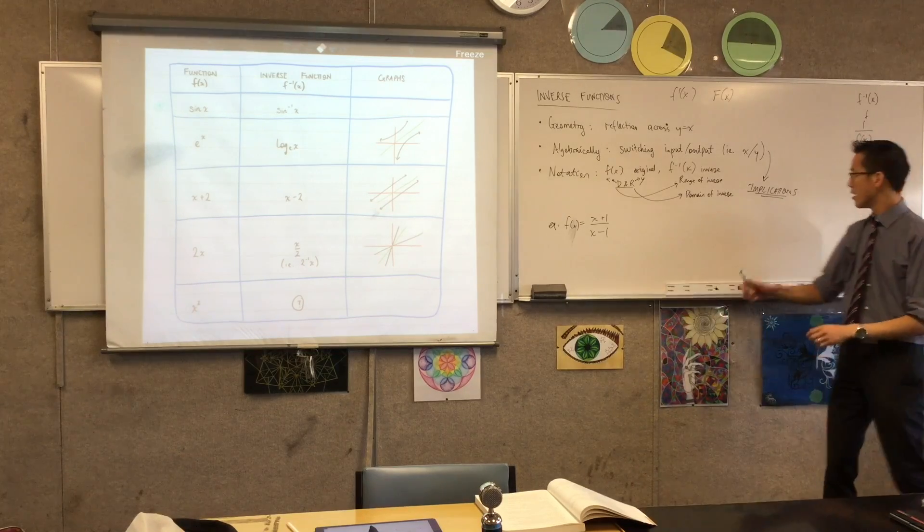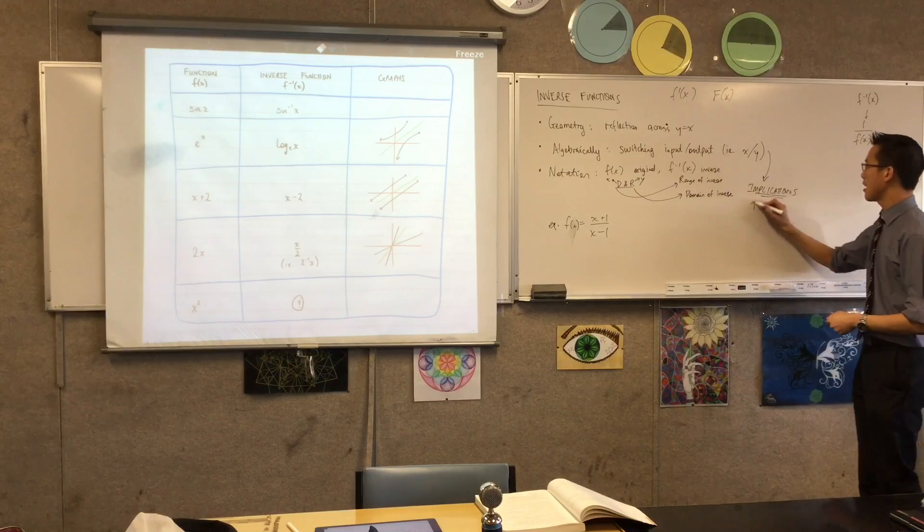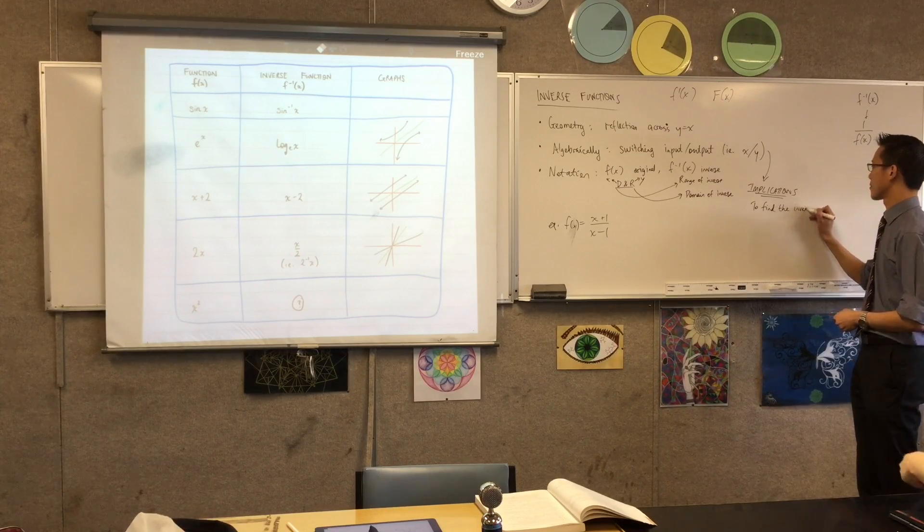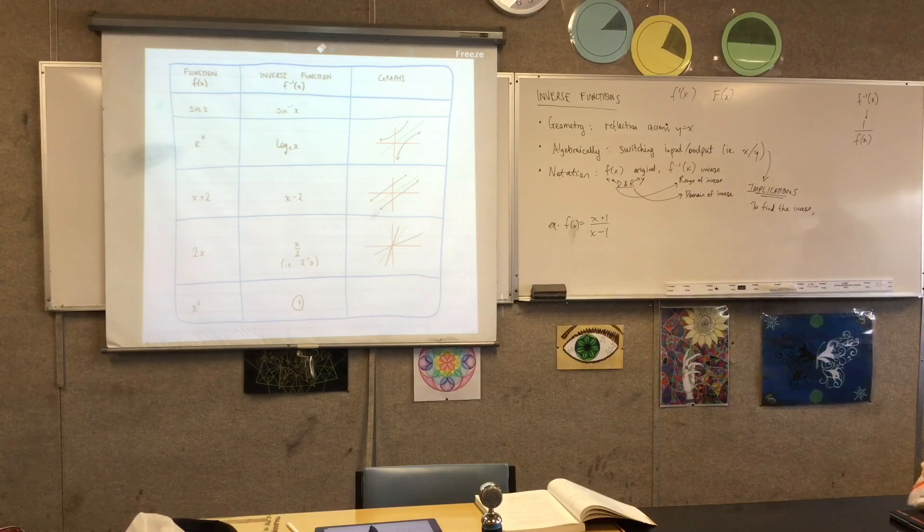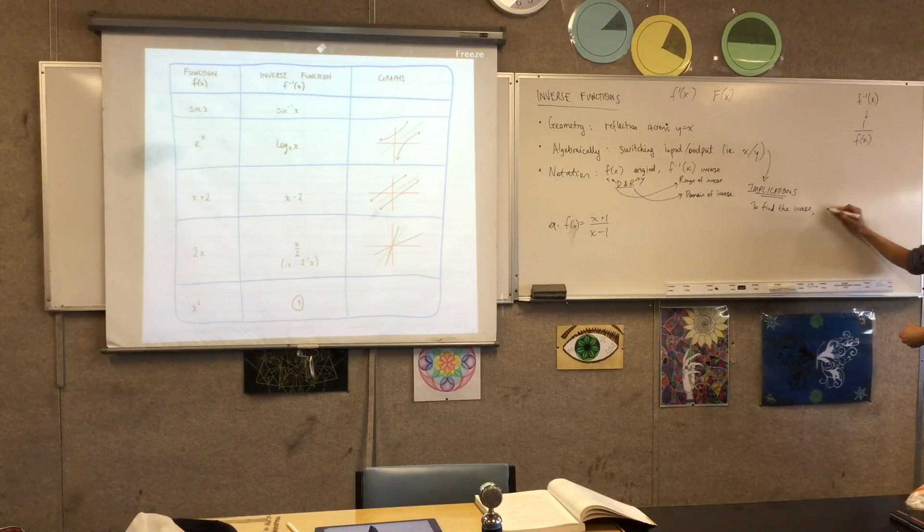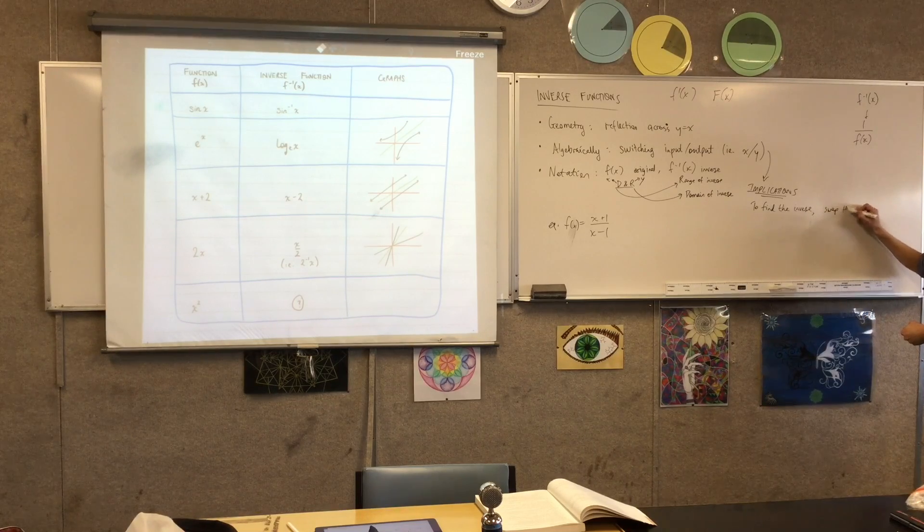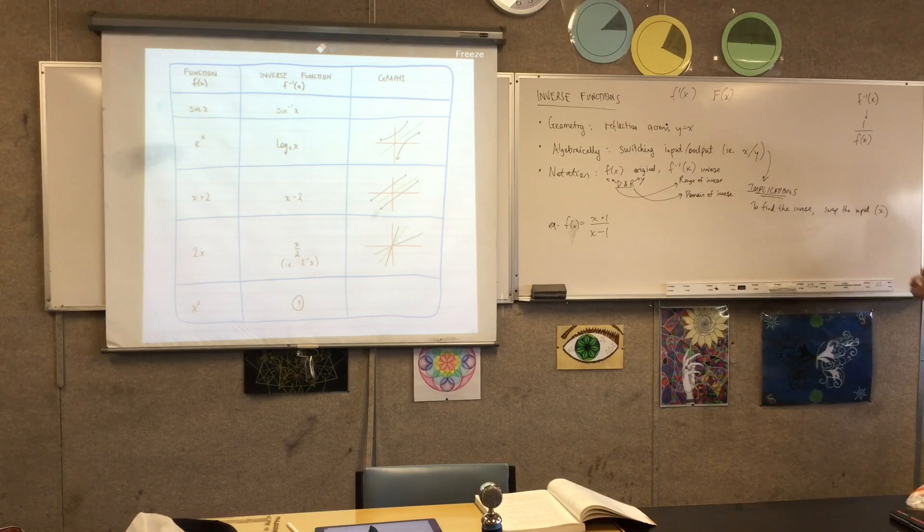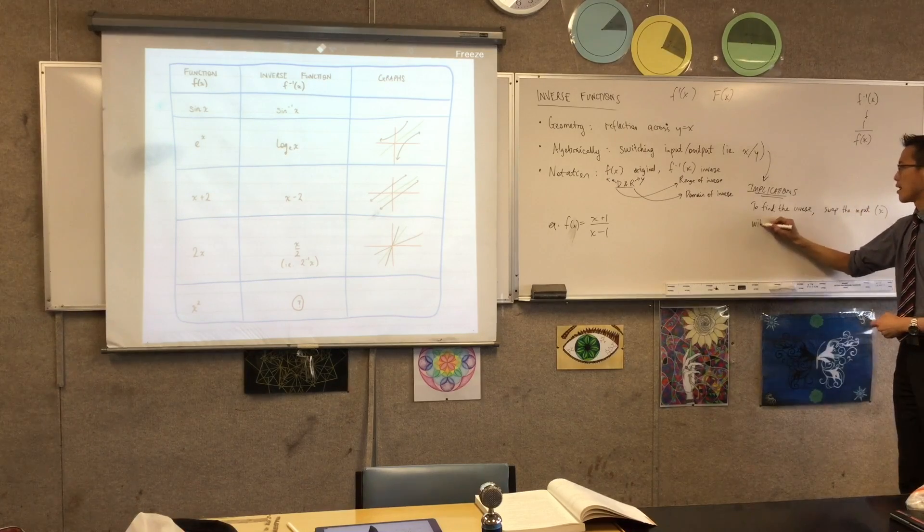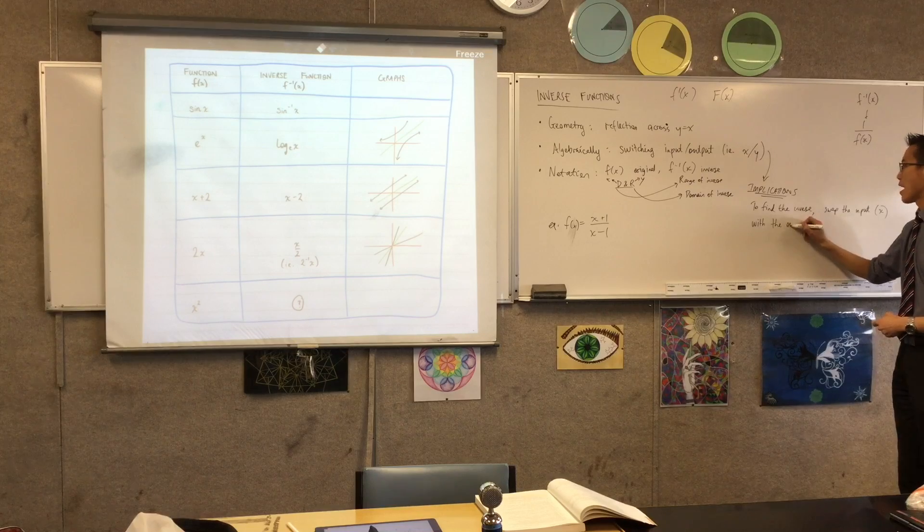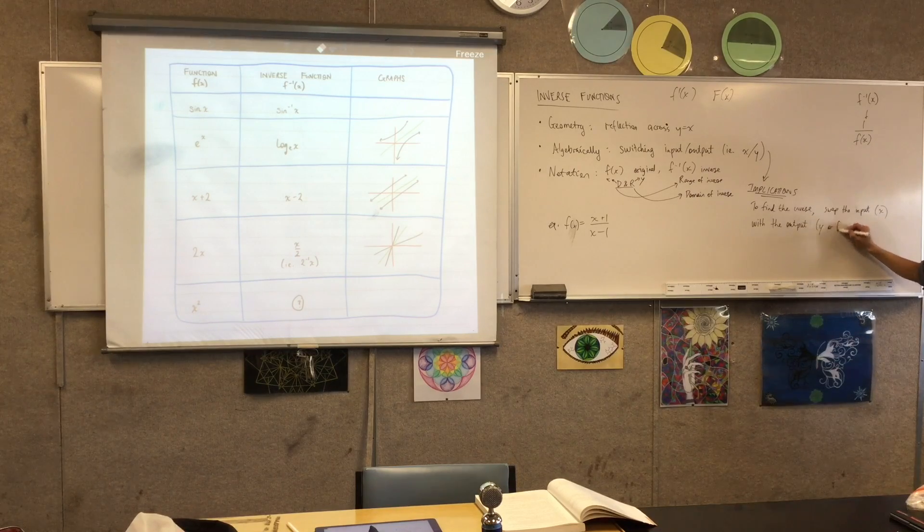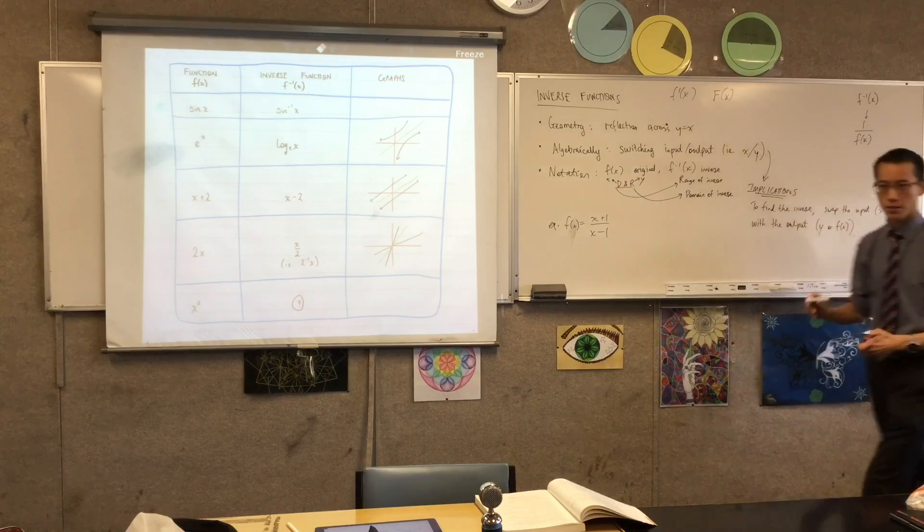So if I take this, the implication is to find the inverse. The actual mechanism we use is to swap the input, which is always going to be x, with the output. And that will be either y or f of x.